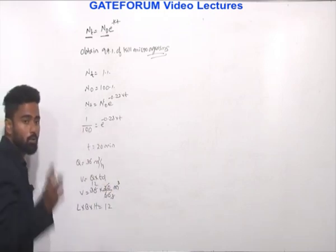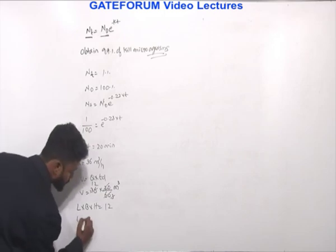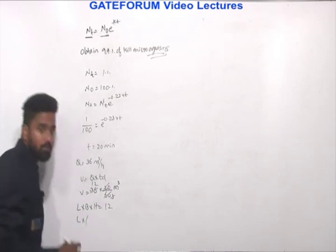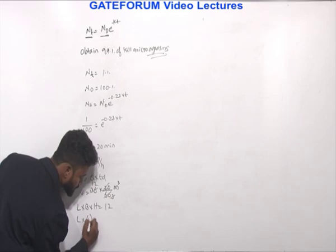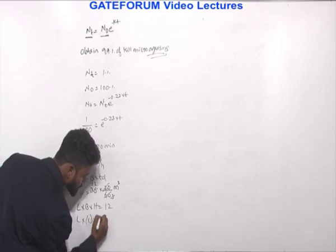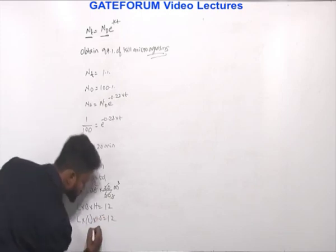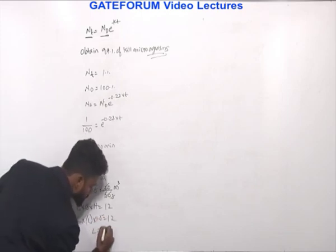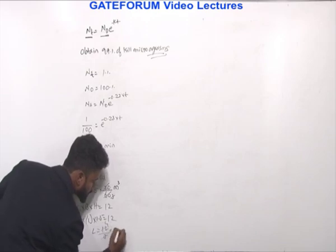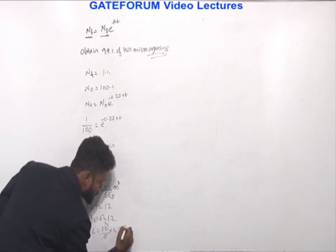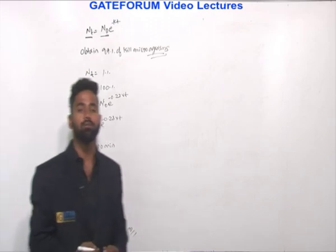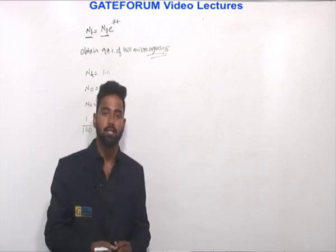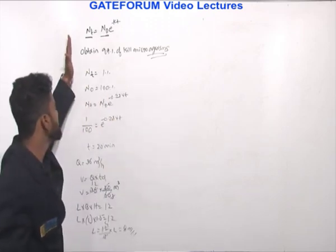Once we get the volume, L × B × H = 12 meter cube. The width is 1 meter and the depth is 1.5 meters. So L = 12 / (1.5 × 1) = 12 / 1.5 = 8 meters. This is how we calculate the length of the chlorination tank.